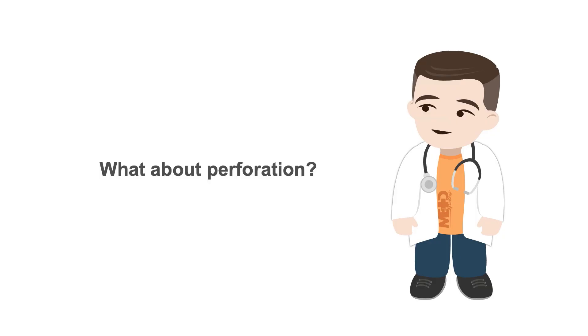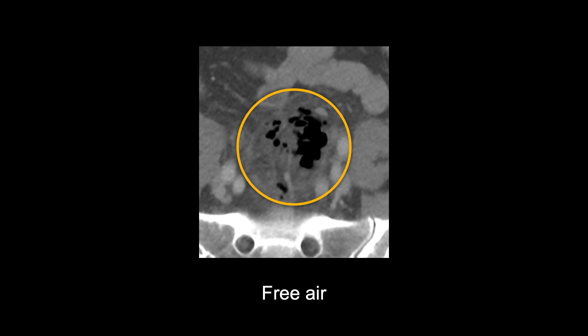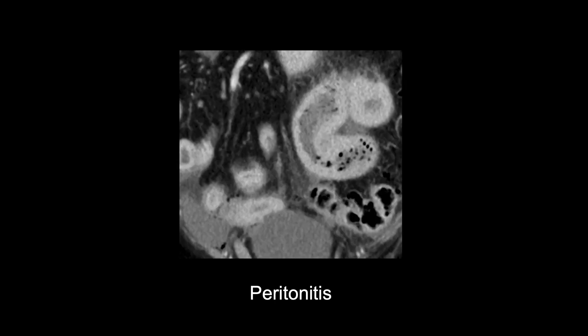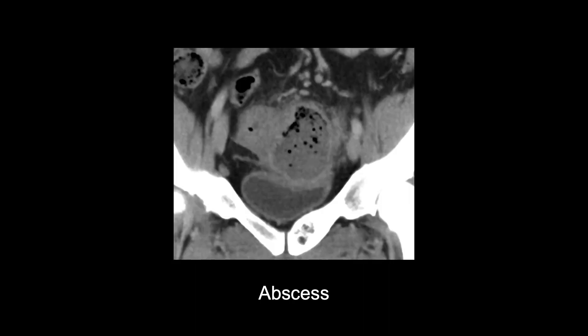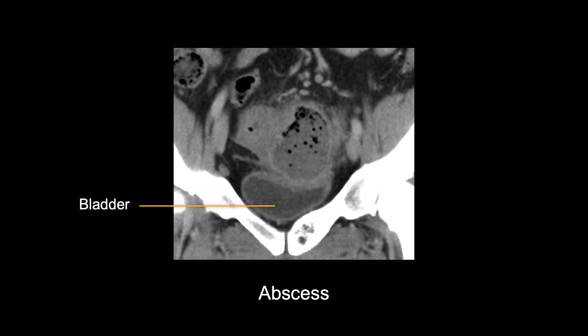What about complicated forms of diverticulitis, as in the case of perforation? If a perforation has occurred, you will see three additional findings. These include extraluminal or free air, which will look like black dots outside of the bowel and is usually easiest to see on bone or lung windows. You will also see peritoneal inflammation resulting from spillage of stool from the perforation — in this example, the small bowel loops are thickened and inflamed, indicating peritonitis. And lastly, abscess formation, which typically appears as an enhancing collection with fluid, air, and debris. Notice how the abscess sits on the bladder and causes the bladder wall to indent and become thickened due to reactive inflammation.